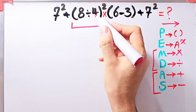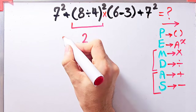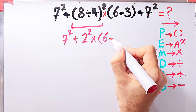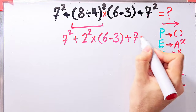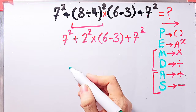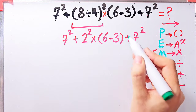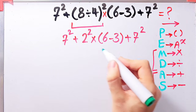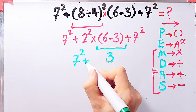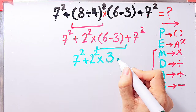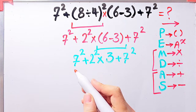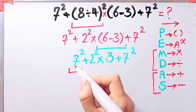Inside the first parenthesis we have 8 divided by 4, which equals 2. Now the question is 7 to the power of 2 plus 2 to the power of 2, then times open parenthesis 6 minus 3 close parenthesis, plus 7 to the power of 2. Again we simplify the remaining parenthesis: 6 minus 3 equals 3. Now we have 7 to the power of 2 plus 2 to the power of 2 times 3, then plus 7 to the power of 2.